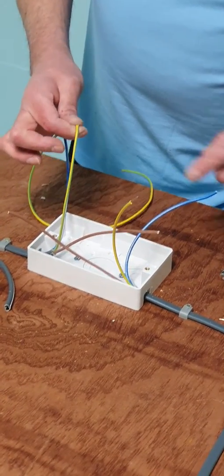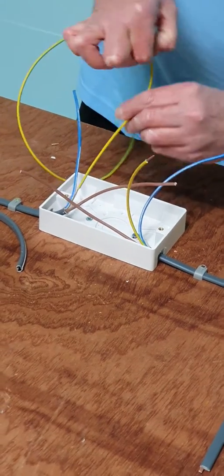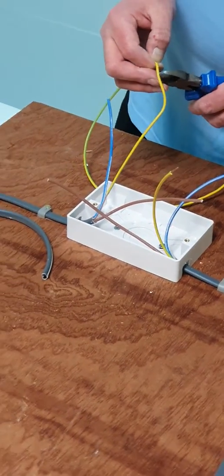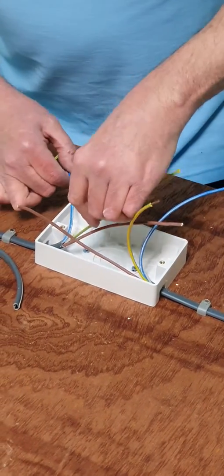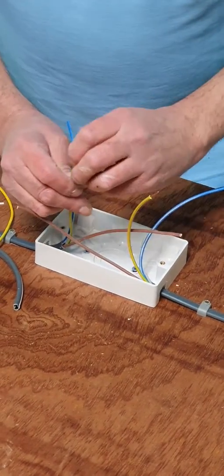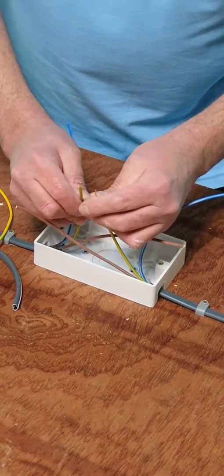Again feel where the end of the copper is. Pull the sleeving back out where our mark is. Centimeter or so off. Push the sleeving back down. We're then left with our terminated ends.